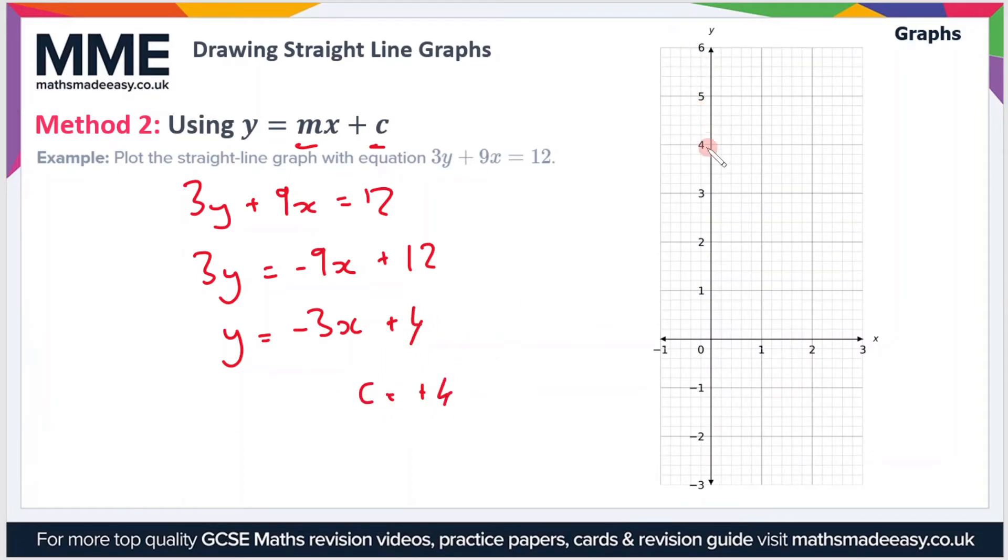Then all we need is the gradient which is m. The gradient is minus 3 in this case, so that means for every one square we go across we go 3 down, and it's down because it's negative. If we take our ruler again, let's go three squares down for every one square we go across. You should end up with a graph that looks something like this.